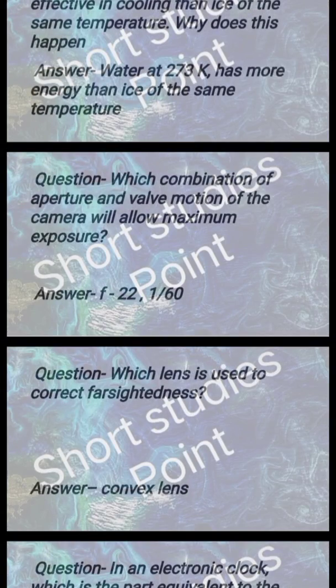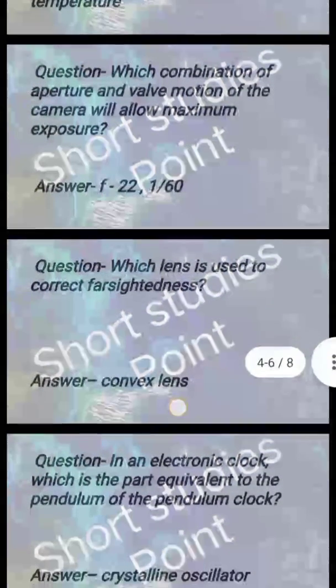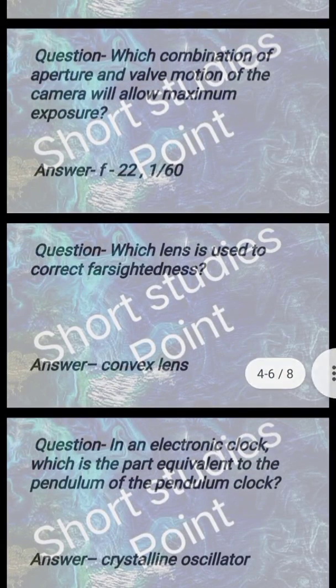Next question: Which combination of aperture and motion of the camera will allow maximum exposure? Answer: Aperture f/22, shutter speed 1/60.